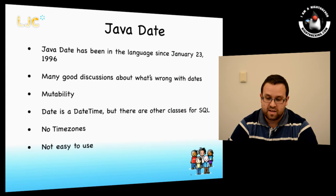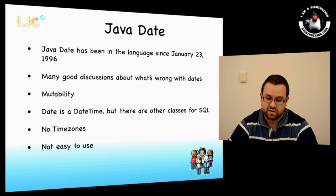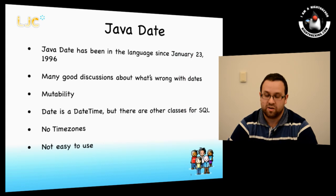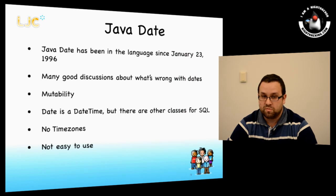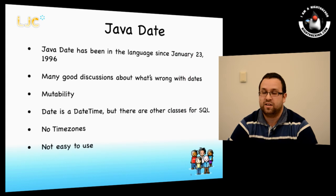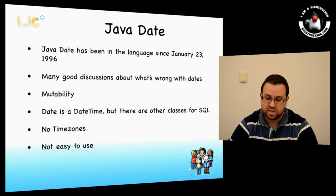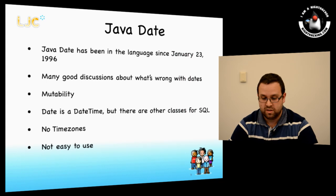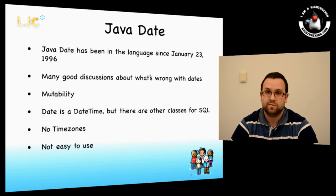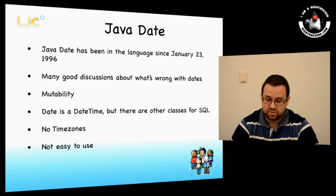Java Date has been in the language since the very beginning of Java, and there are many good discussions about what was wrong with the current implementation. Some of those issues are: things are mutable; Date is actually really a DateTime; there are also other classes for SQL — a mixture of DateTimes, dates for SQL, times for SQL. There's no time zone support, and it's not easy to use.